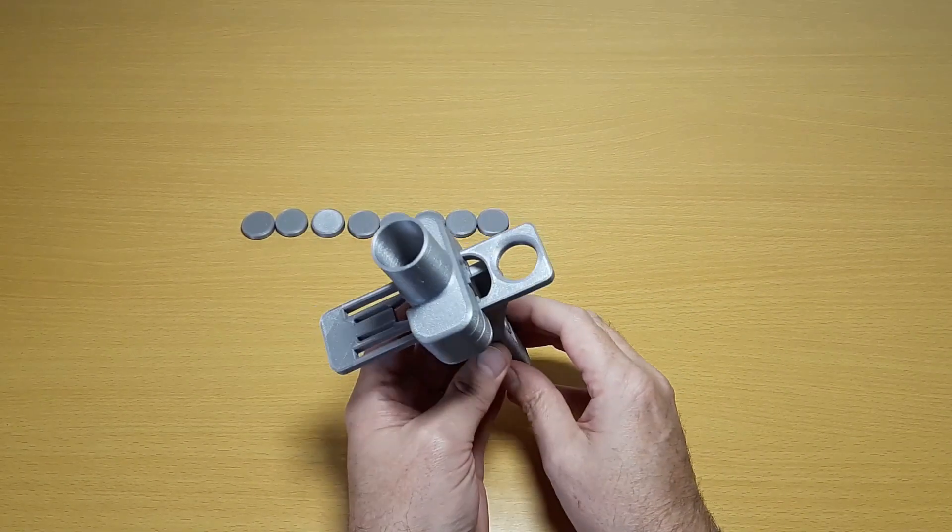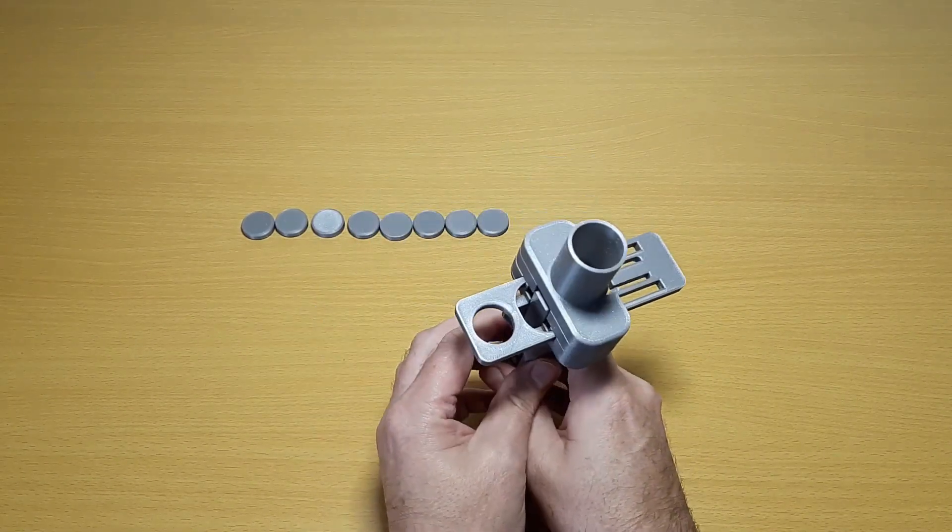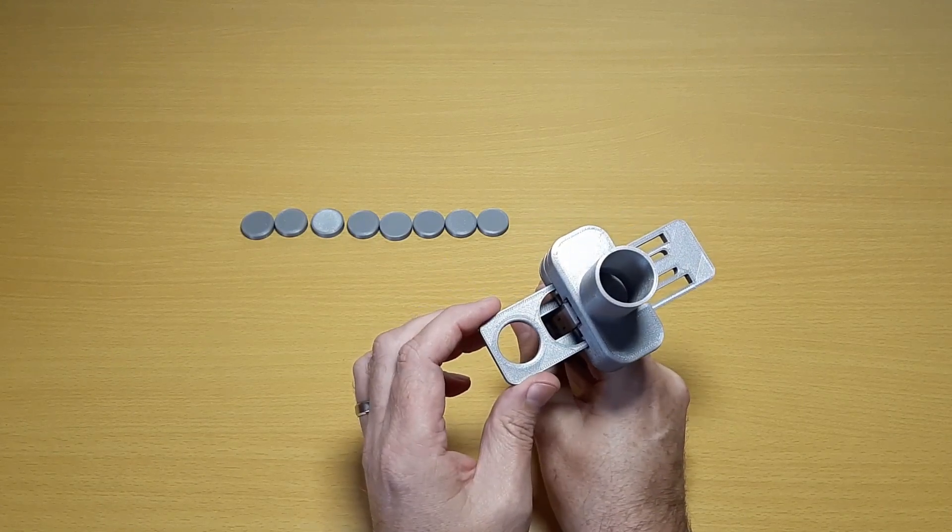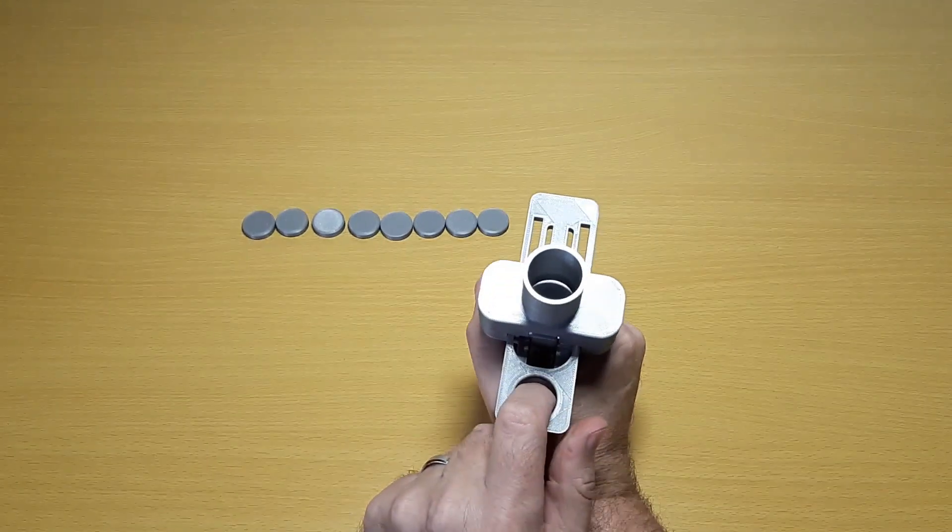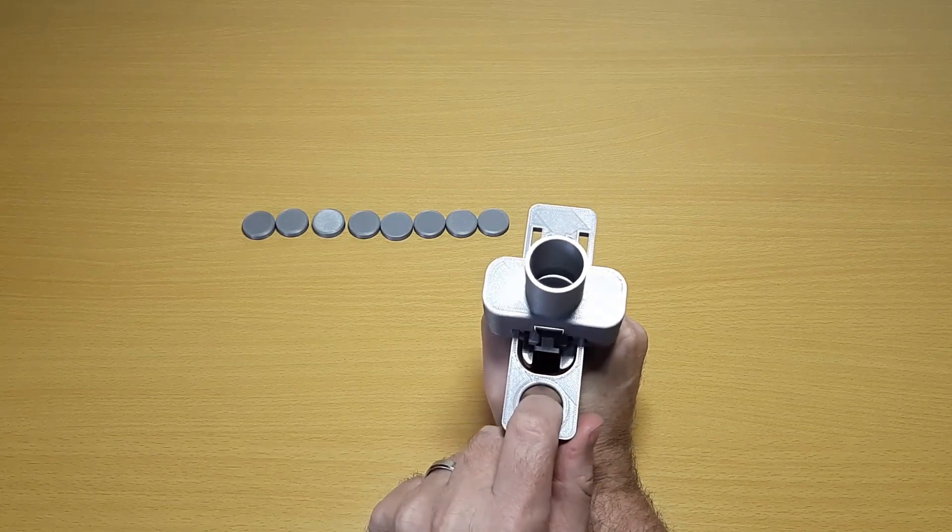That's it, the disc shooter is now complete. It's best to check that it works properly by pulling back on the slider and making sure that the spring is pulled back.